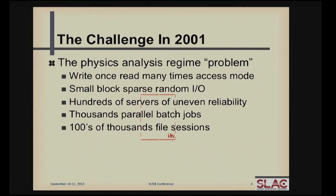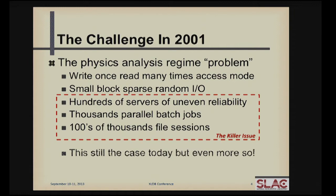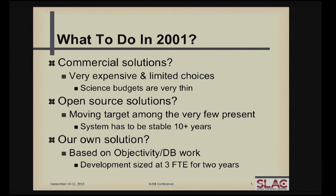Let's take a look at the challenge in 2001. In the physics analysis regime, you had hundreds of servers, thousands of parallel batch jobs, and potentially hundreds of thousands of open file sessions. That was the killer issue, and it still is the case today. So what can you do in 2001? Well, you can go commercial — but there were very few commercial solutions, and the ones that were available were incredibly expensive. Science budgets don't allow for very expensive solutions, so that was sort of out.